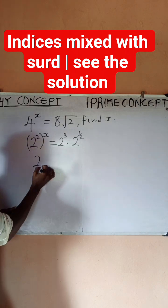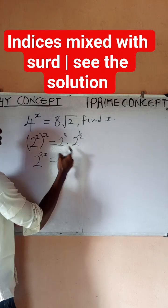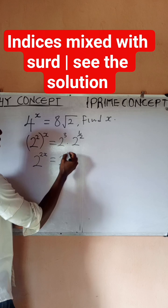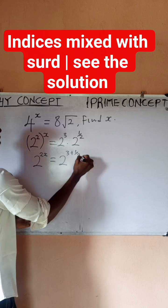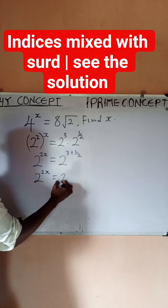So now, from all we know in indices, this can multiply this. So I have two raised to power two x equals two to power - from indices when you have same base you can add up their powers.